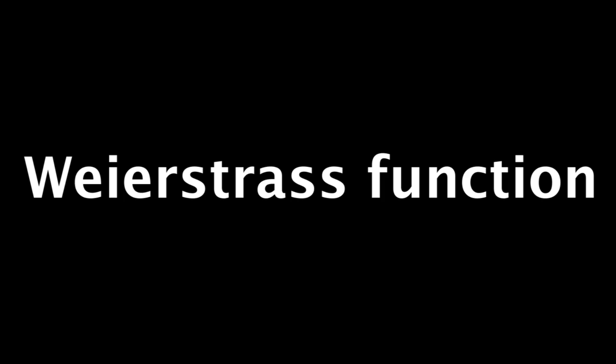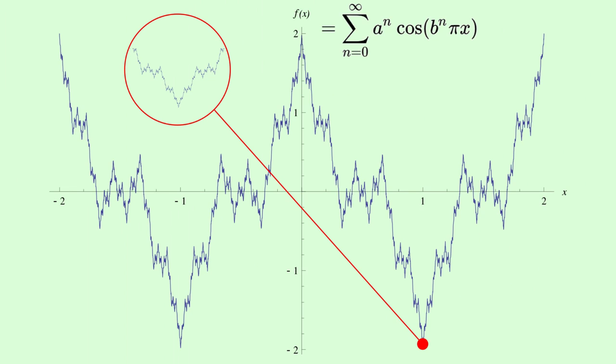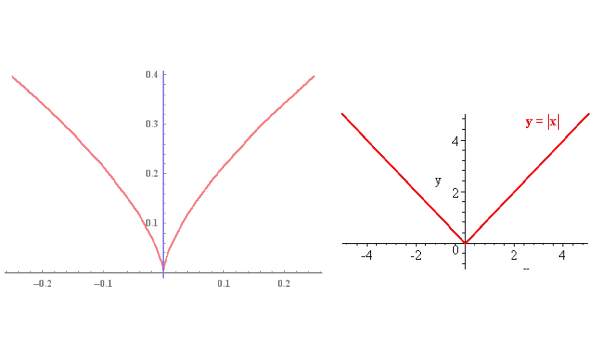For example, take the Weierstrass function. I hope I'm pronouncing that correctly. This is a curve that's continuous everywhere, but differentiable nowhere. If you've taken calculus, you know a curve like this with a sharp corner or one with a cusp is continuous, but not differentiable at that sharp point.